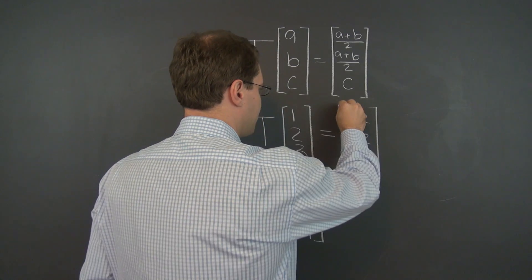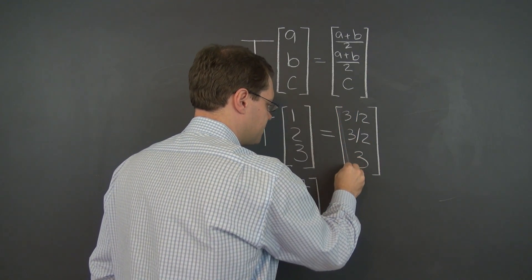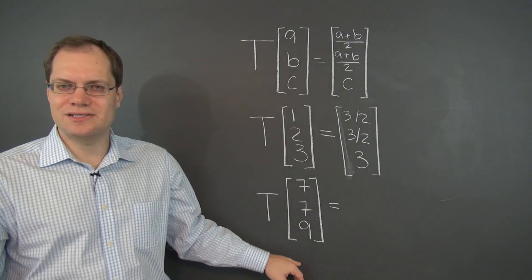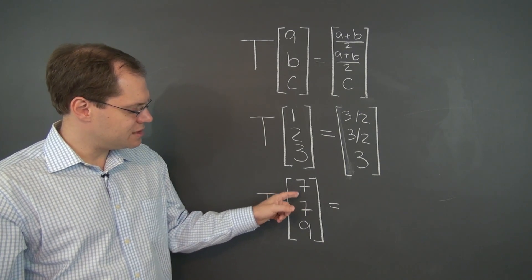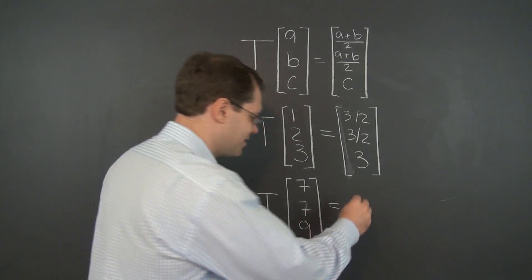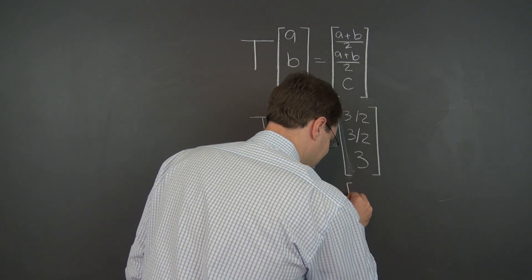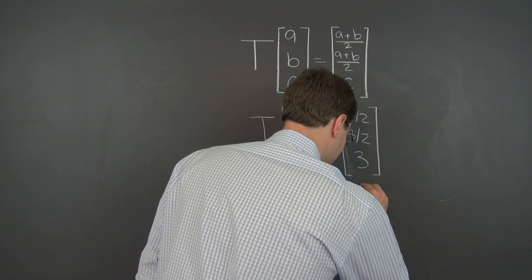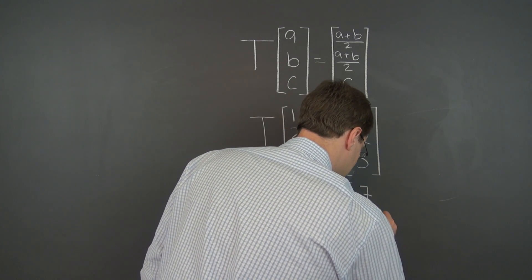What about 7, 7, 9? Seven becomes 7 plus 7 over 2, which is 7. This 7 also remains a 7 and this 9 also remains a 9. So we now understand what this transformation does.